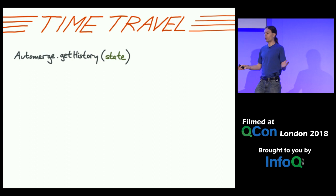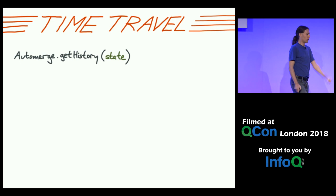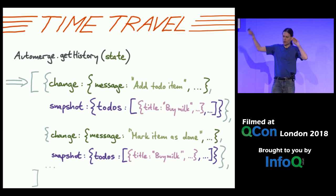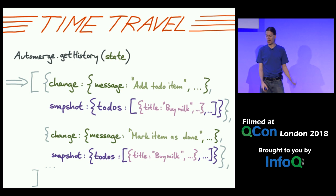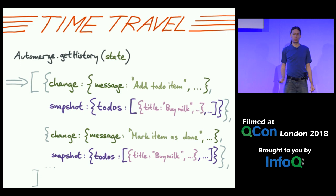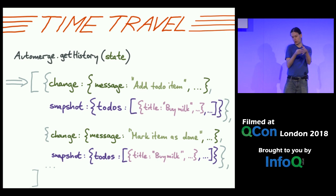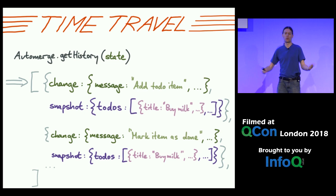Keeping all operations forever has really nice properties — we can do time travel. Because we have all the changes that happened, we can look at past states of the document. You can ask for the history and get a list of states the document went through since the beginning, with the commit messages attached, giving you a snapshot of what the document looked like at any point in time.